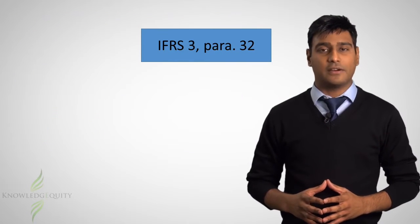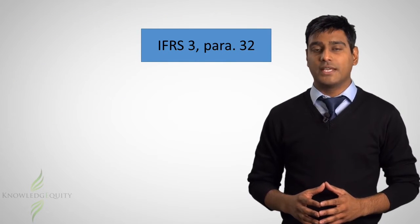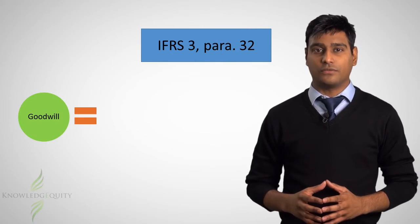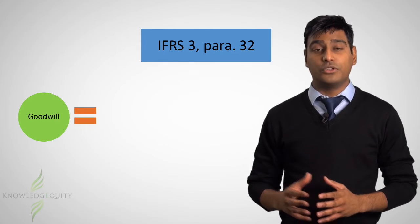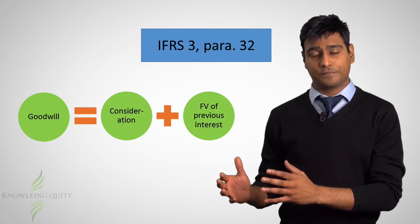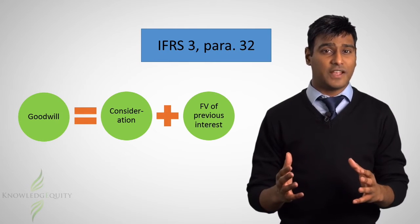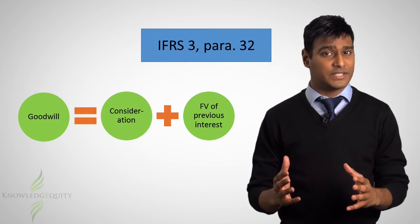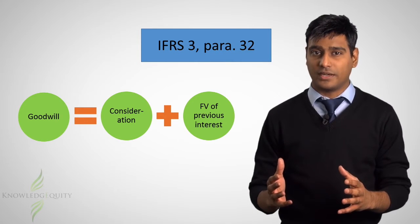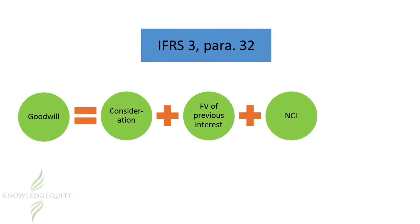IFRS 3 paragraph 32 sets out the formula for the calculation of goodwill, which is: purchase consideration, plus the fair value of previously held equity interest in the acquiree, plus the amount of non-controlling interest, minus the fair value of the identifiable net assets of the acquiree.